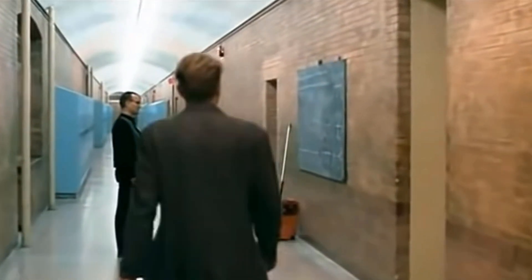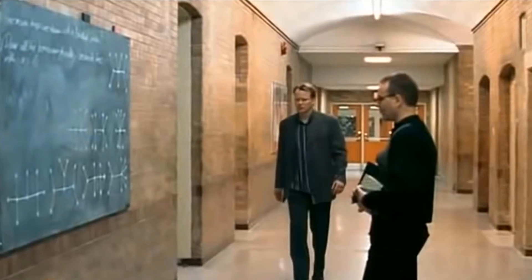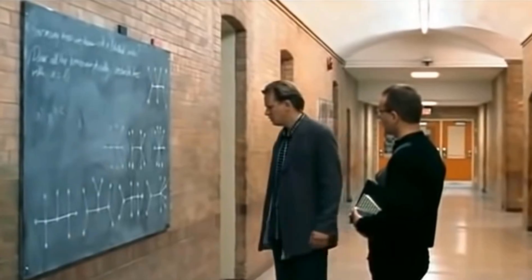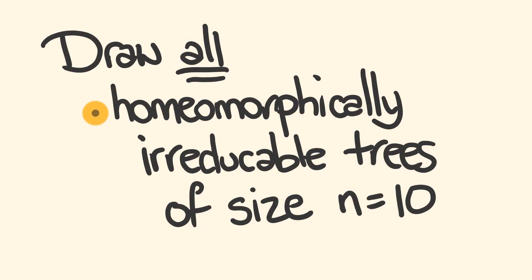I'm going to give this problem to you in two different ways. First, I'm going to give it how it is given in the movie — with a whole bunch of jargon and big mathy words that sound really smart and scary. Then I'm going to break it down into plain English so you'll see this is a problem you can actually give a fair go to. Here is the problem as given in the movie: Draw all homeomorphically irreducible trees of size N equals 10.